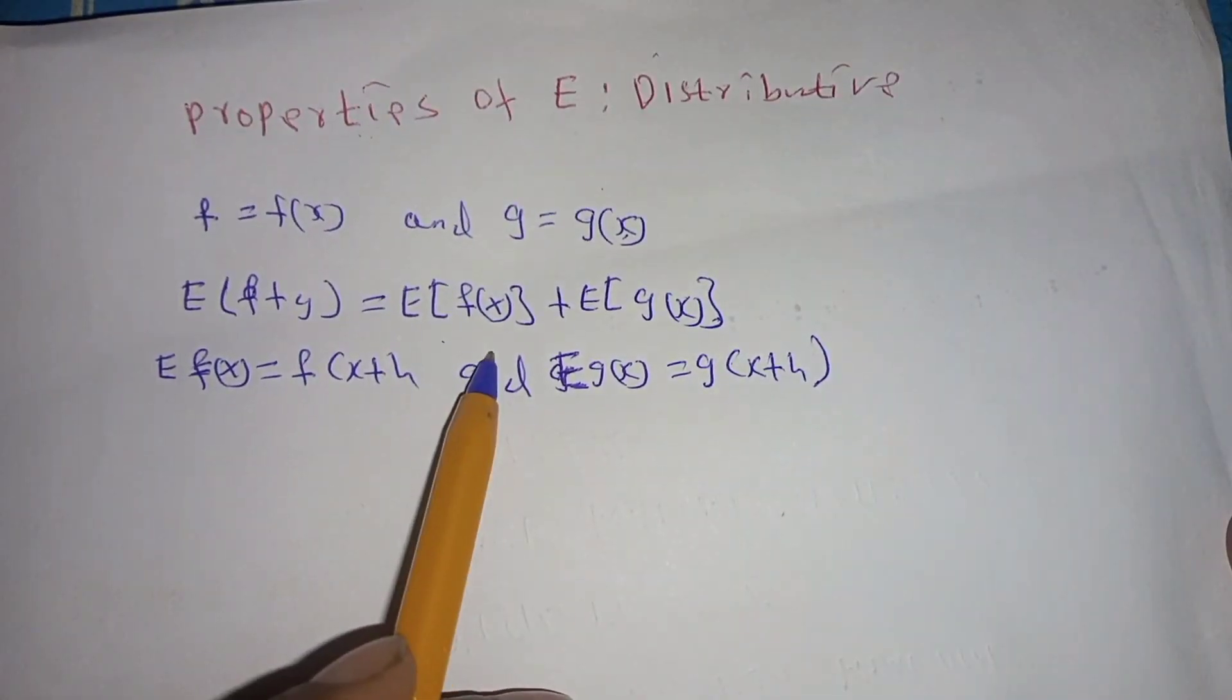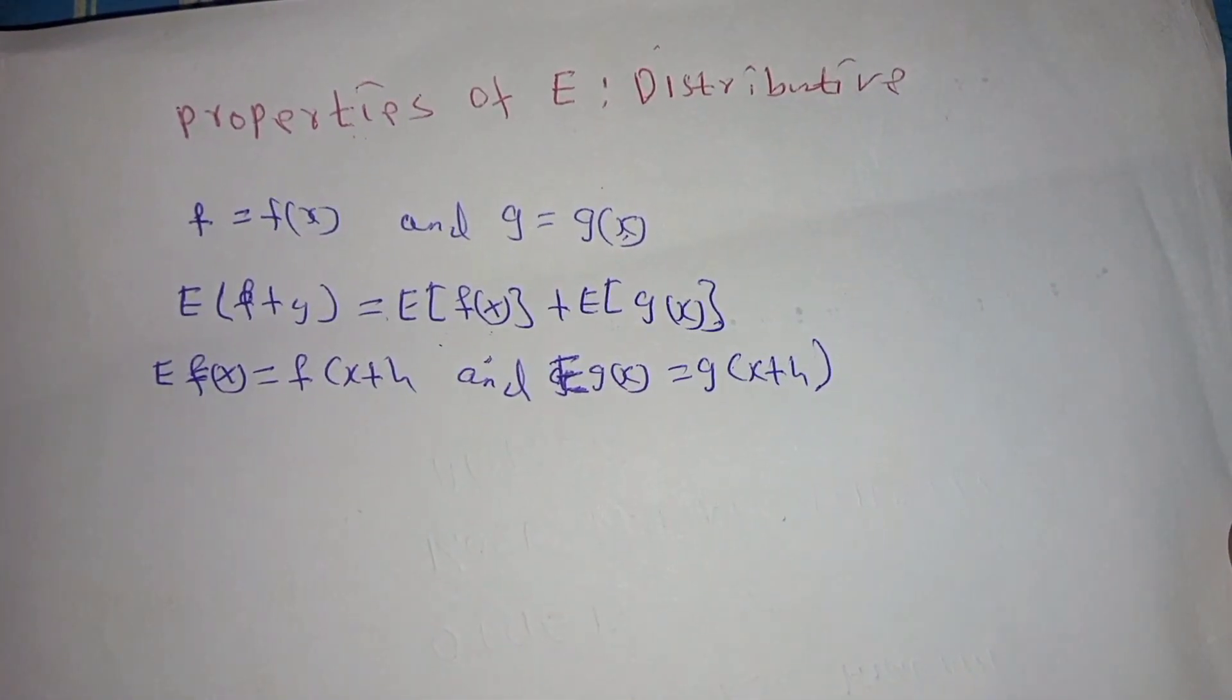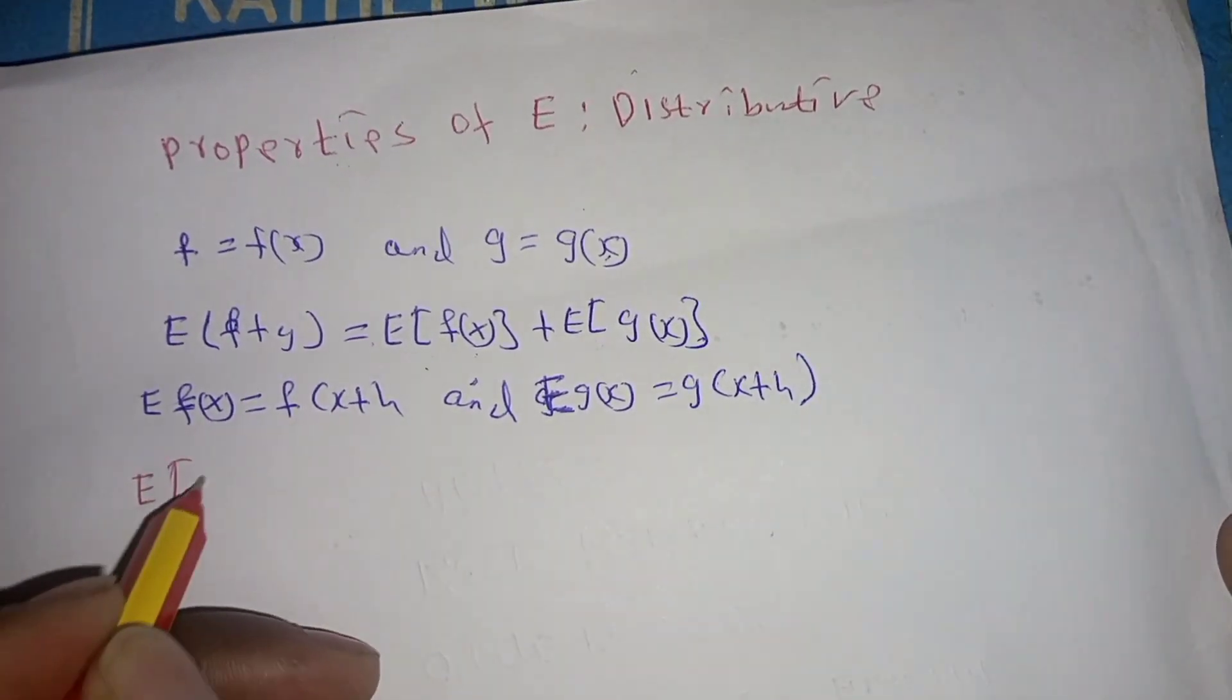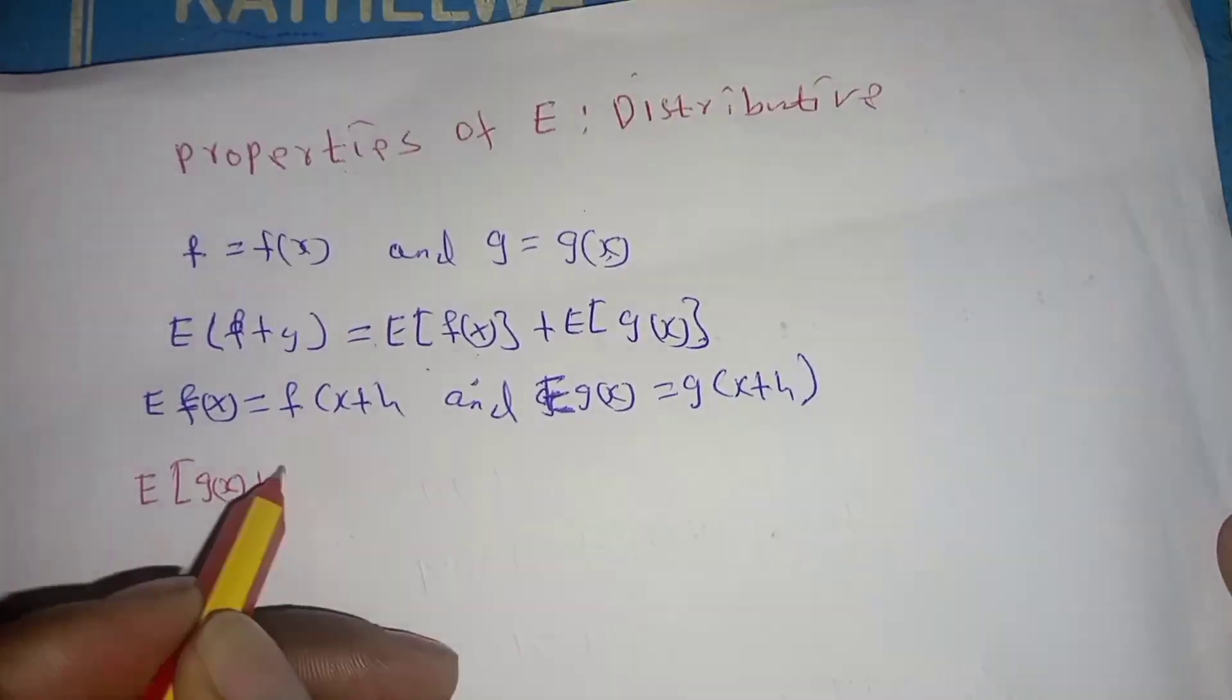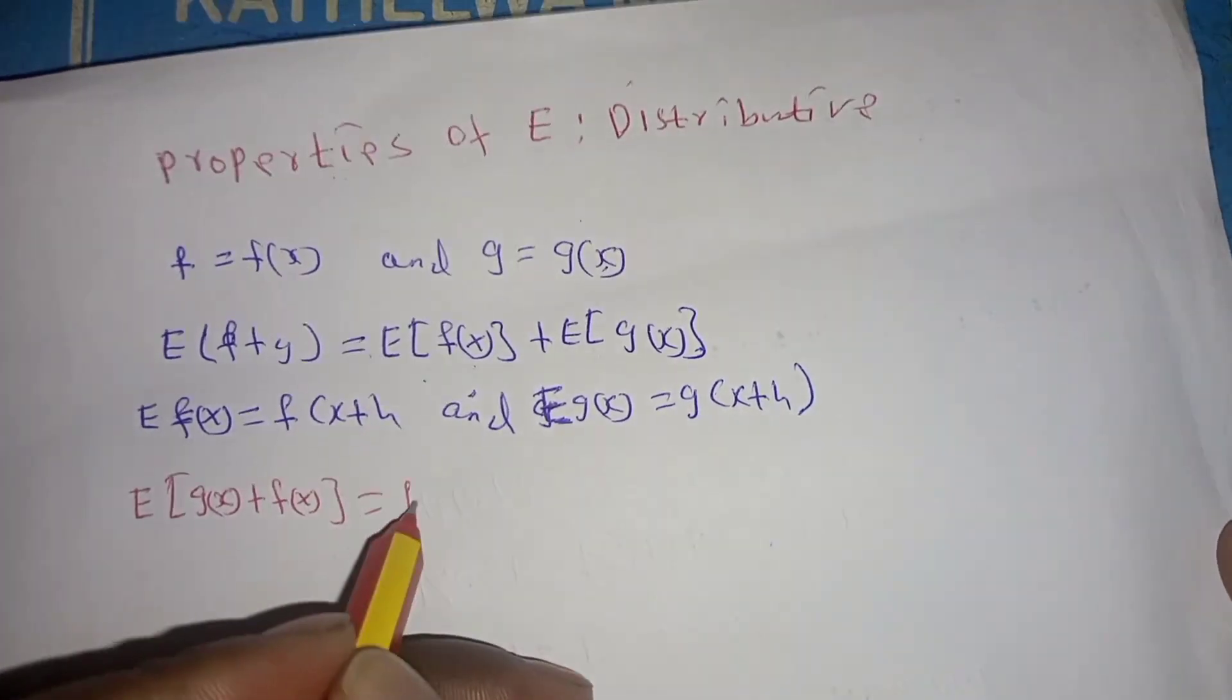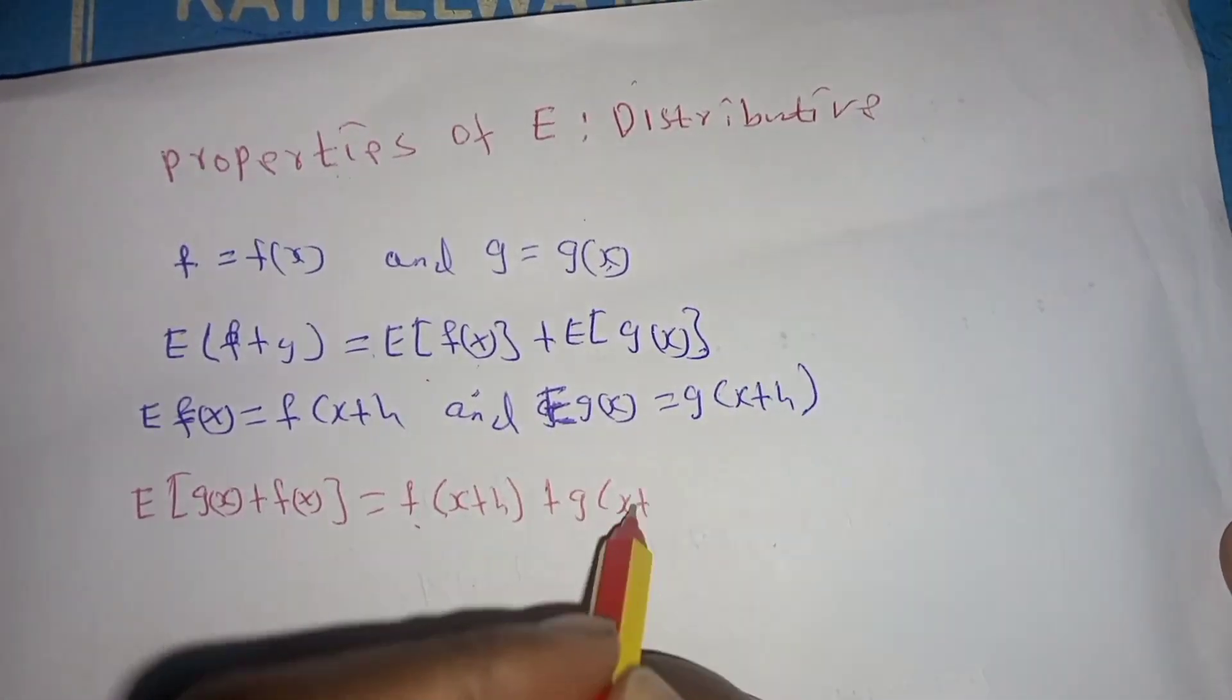So substituting E of f of x there and E of g of x there we are going to obtain the following: f of x plus h plus g of x plus h.